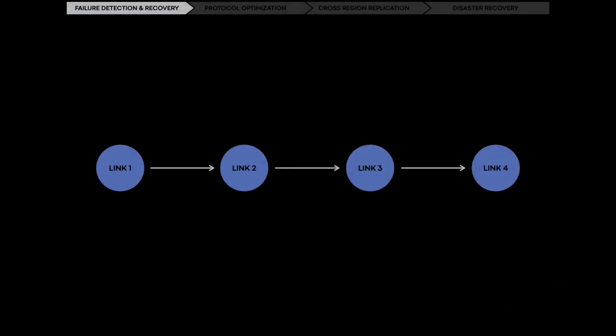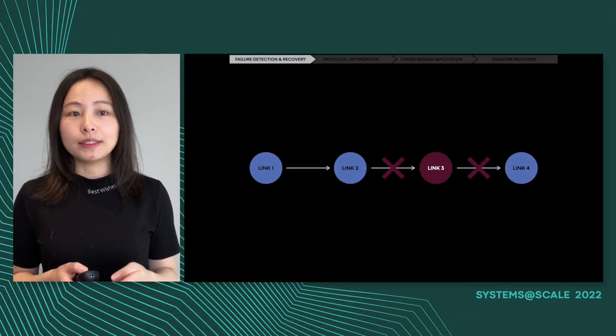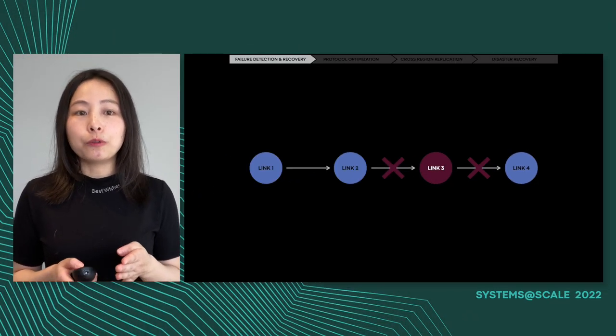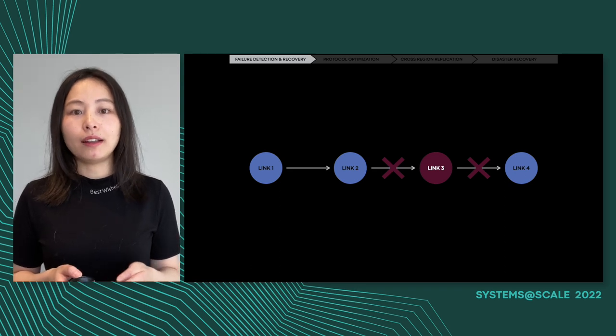For failure detection, we apply some voting logic where a host gets disabled if several peers vote it to be unhealthy. Check the diagram as an example. Link 3 in the chain is now not reachable by link 2 and link 4. Both upstream and downstream vote link 3 to be unhealthy. Then link 3 gets disabled and removed from the chain. Of course, there are several decisions that we need to make here and what kind of trade-offs that we need to think about.